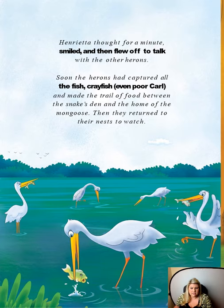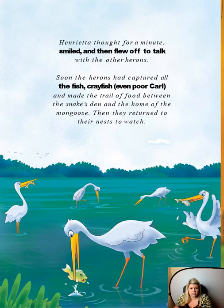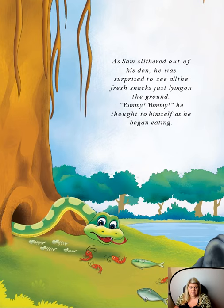Henrietta thought for a minute, smiled, and then flew off to talk with the other herons. Look at the herons — one, two, three, four, five. Herons are birds with really long beaks and long legs, and they like to eat fish. Soon the herons had captured all the fish and crayfish — even poor Carl — and made the trail of food between the snake's den and the home of the mongoose. Then they returned to their nests to watch. As Sam slithered out of his den, he was surprised to see all those fresh snacks just lying on the ground.